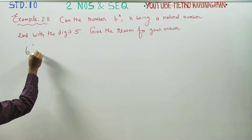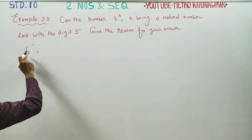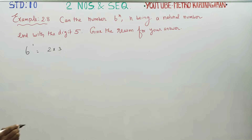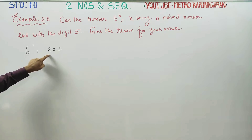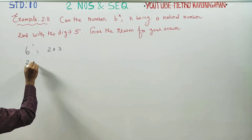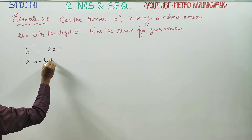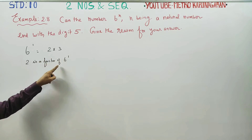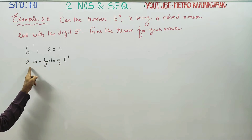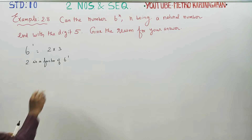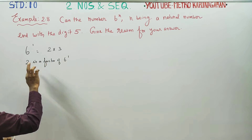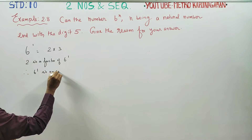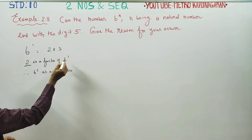Now first, 6 power 1. 1 is a natural number. This can be written as 2 into 3. 2 into 3 is 6. 2 is a factor of 6 power 1. Since 2 is a factor, 6 power 1 is an even number.